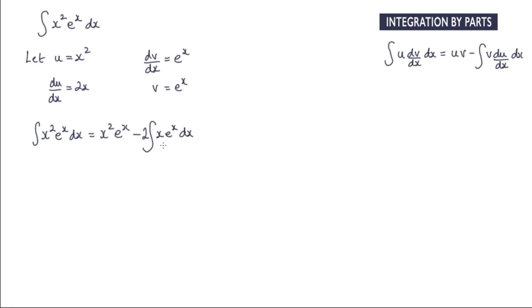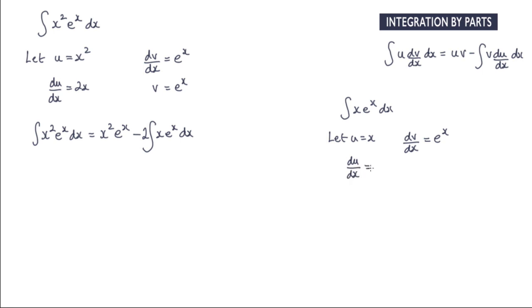Now I'm going to have to apply integration by parts again on this integral here. We've got the integral of x e to the x dx. We can let u equal x and dv by dx equal to e to the x. Differentiating x we just get du by dx equals 1, and integrating gives v equals e to the x.